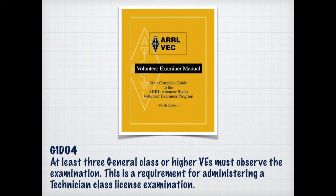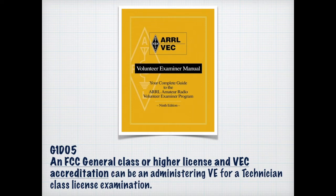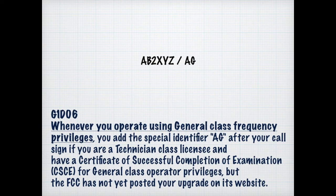If you're administering a technician license exam, you have to have at least three general class license holders that have a VE accreditation, or higher accreditation such as amateur extra, in order to facilitate that exam. An FCC general class or higher license and a VEC accreditation is necessary in order to administer or be an administering VE for a technician license exam. Once you pass your exam for the general class, you can immediately start using the privileges, as long as you give your call sign and then say slash AG or slant AG — either one is acceptable.